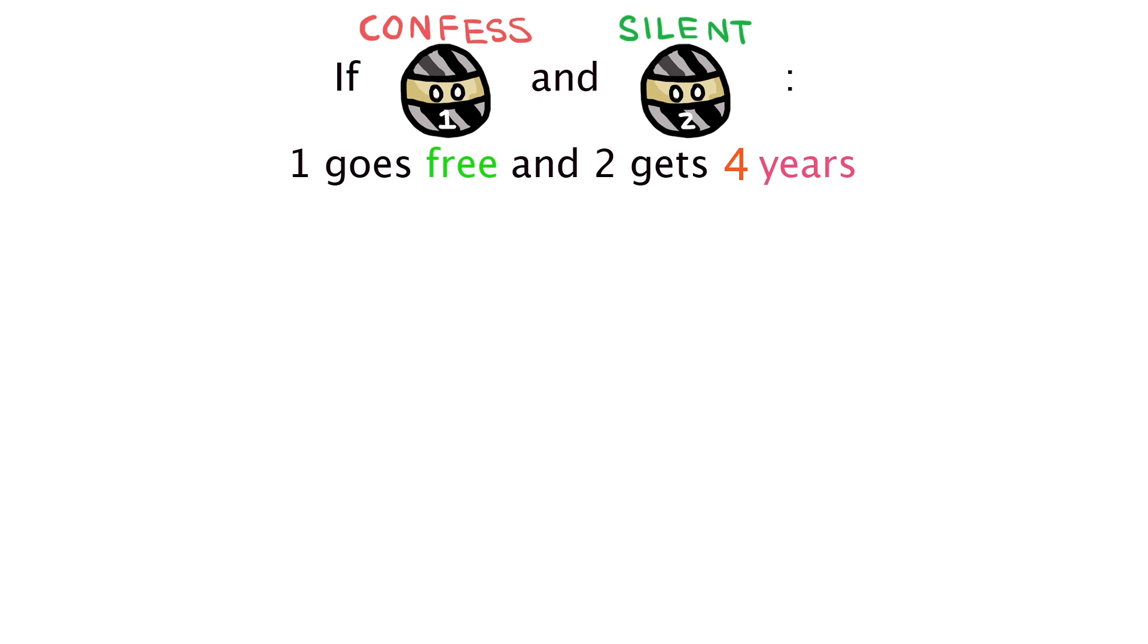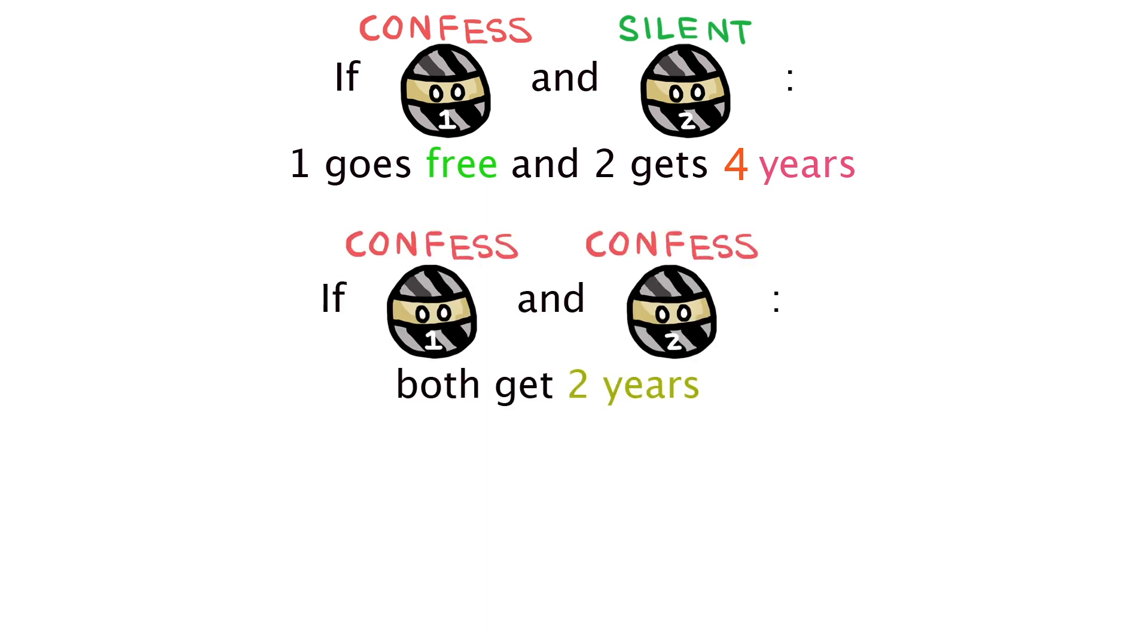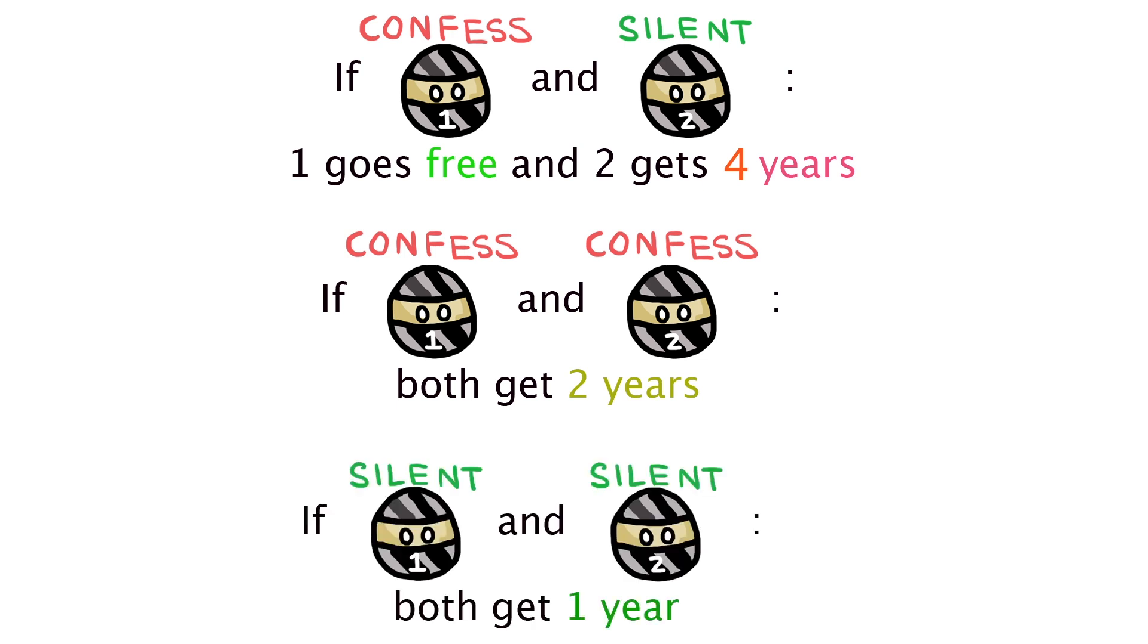If prisoner one confesses and two doesn't, then one gets set free and two gets a four-year sentence. If both confess, then they each get two years in prison and if both of them stay silent, then the police won't have evidence so they will both get one year for the other minor charge.